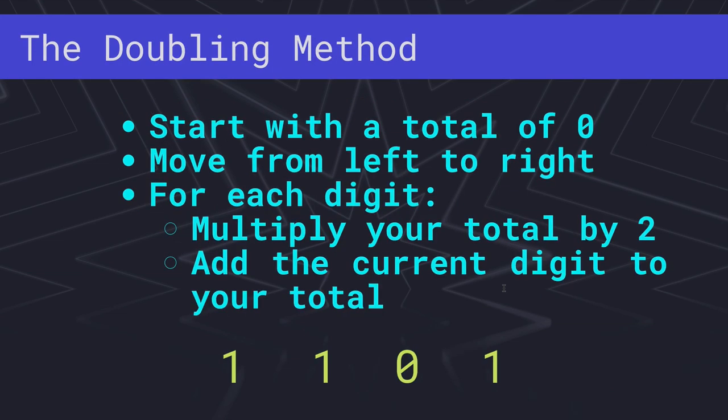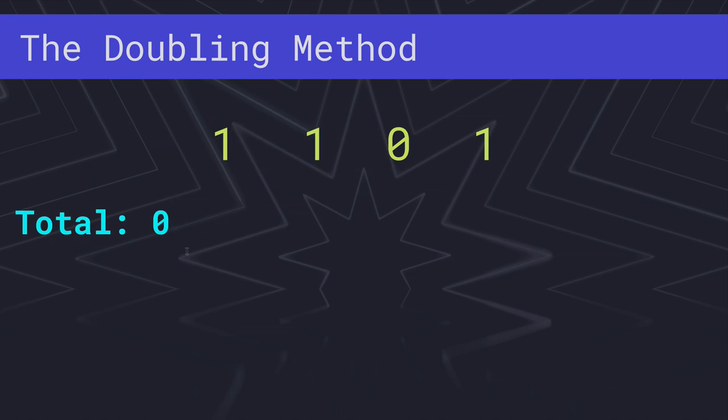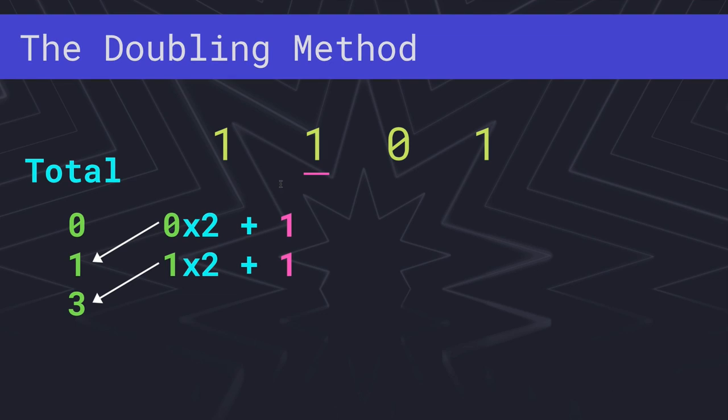But there is a faster way. At least some people think this is faster. It's called the doubling method. So there are a couple of rules. Let's say we're trying to convert this binary number to decimal. So we keep track of a total, and it starts at 0. And then we move from the left to the right. So we start here, and we go this way. And for each digit, we multiply our total by 2, and then add this digit to our total. So we start with a total of 0. We multiply it by 2, which is still 0. And then we add this digit, which is 1. So our new total is 1. Then we multiply by 2 again and add this digit, which is also 1, which gives us 3. 1 times 2 plus 1 is 3. Now our total is 3, so we multiply it by 2 and add this digit, which is 0. So that gives us 6, 3 times 2 plus 0. And then we do it one more time. We multiply 6 times 2, which is 12. And we add 1, which gives us 13, which is the final answer. 1101 is 13 in binary.